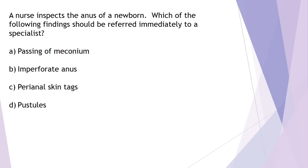Question eleven: a nurse inspects the anus of a newborn. Which finding should be referred immediately to a specialist? Options: A) passing of meconium, B) imperforate anus, C) perianal skin tag, or D) pustule. Passing meconium means the anus is patent — that's good. Skin tags don't need immediate specialist referral, and neither do pustules — they typically resolve on their own. An imperforate anus — one that is not open — requires emergency surgery for the newborn. That's an immediate specialist referral. Answer is B.